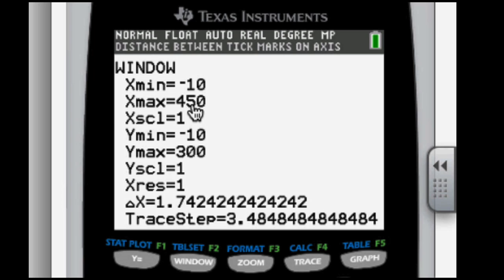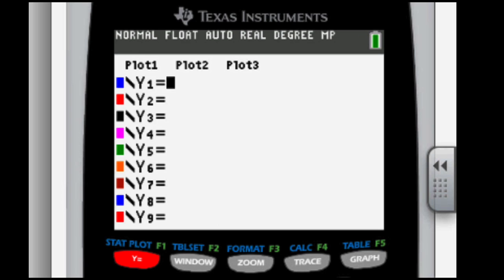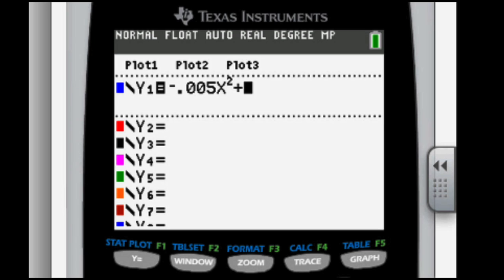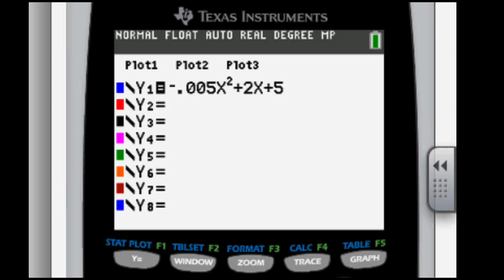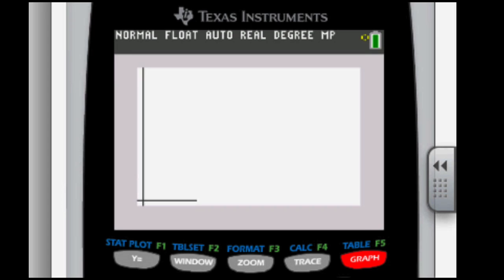Now let's go back to Y equals, and now let's enter in this particular function here. So it's negative 0.005, X squared, plus 2X, plus 5, so that's entered, and now let's go ahead and graph this particular function.